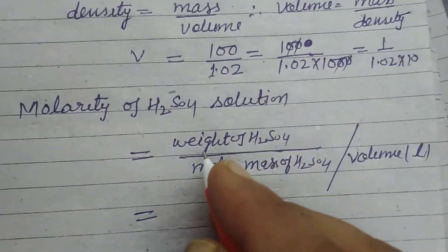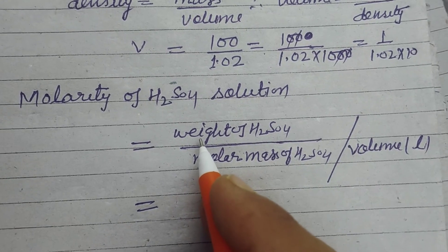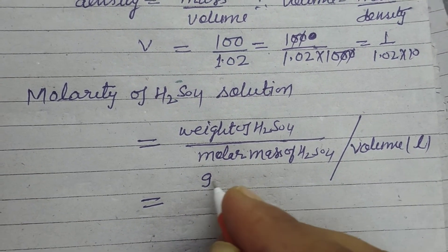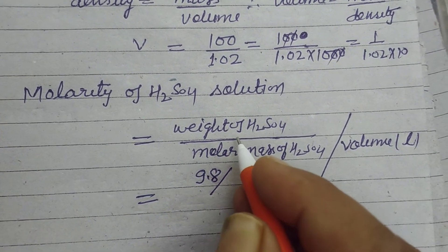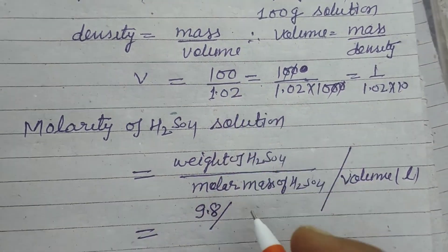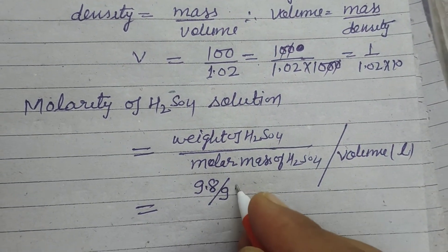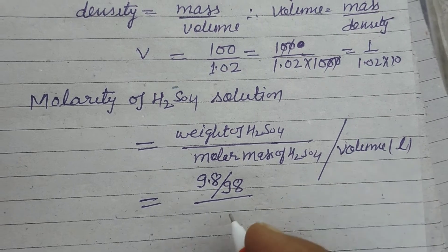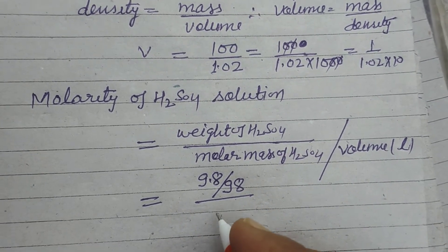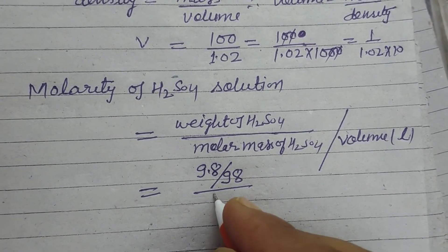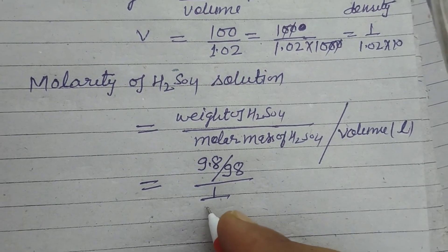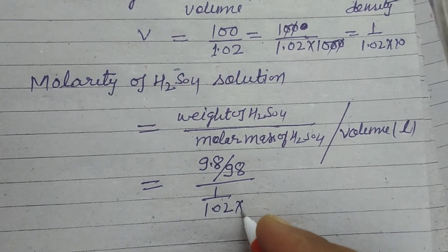Which we obtain by weight of H2SO4, which is given as 9.8 grams, and molecular weight is 98, upon volume in liters. So volume in liters is 1 upon 1.02 into 10.